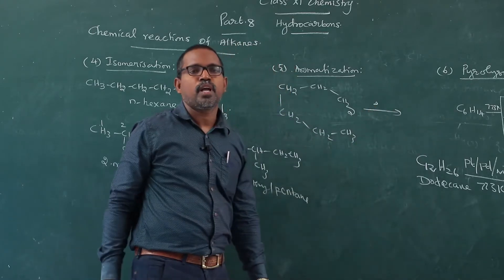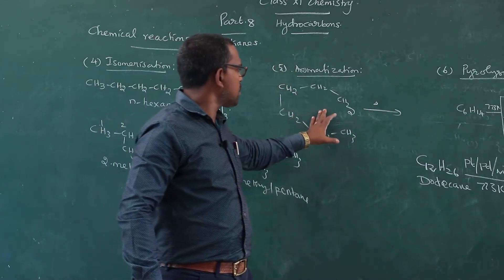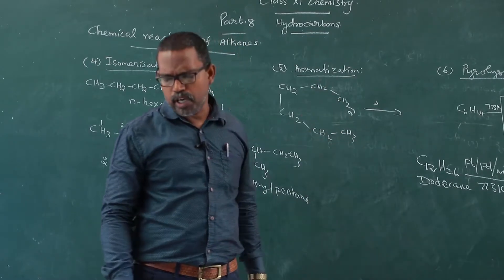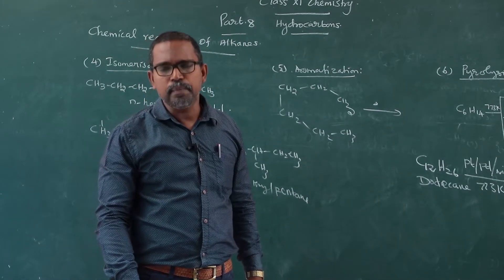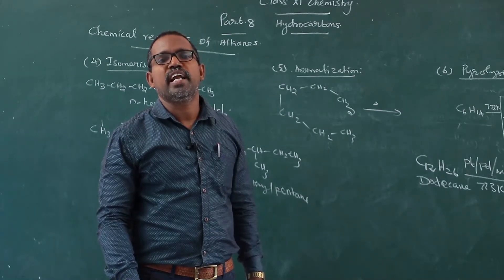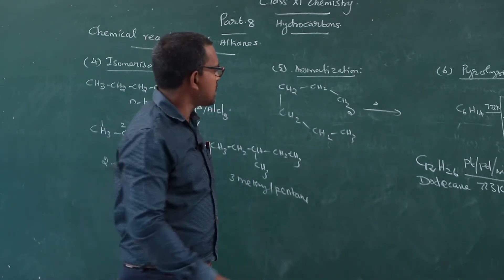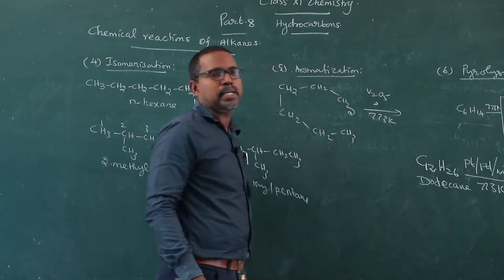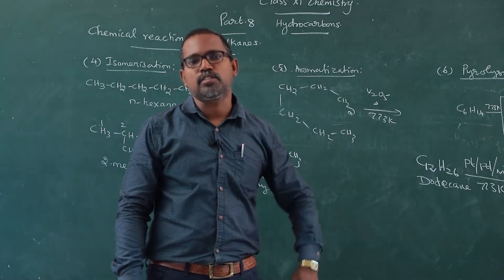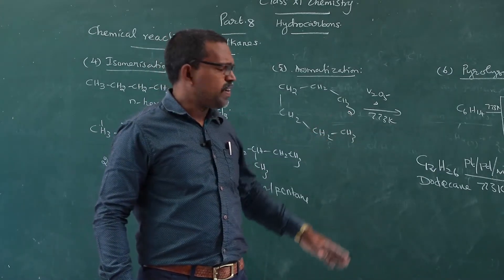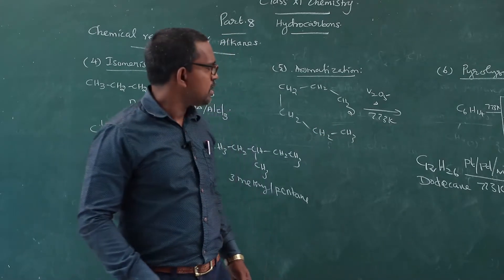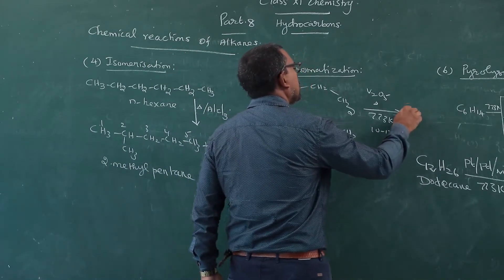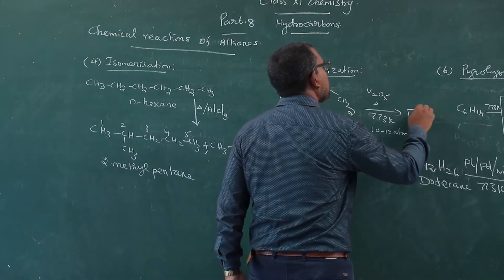On heating, or the vapors of normal hexane vapors are passing over chromium trioxide or vanadium pentoxide at 773 Kelvin. Vanadium pentoxide, you remember any one of the catalyst, either chromium trioxide or vanadium pentoxide at 773 Kelvin, 10 to 12 atmospheric pressure.